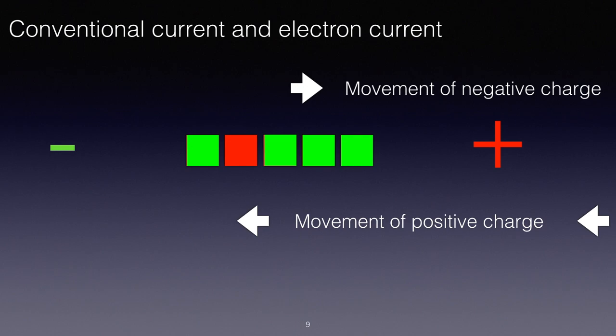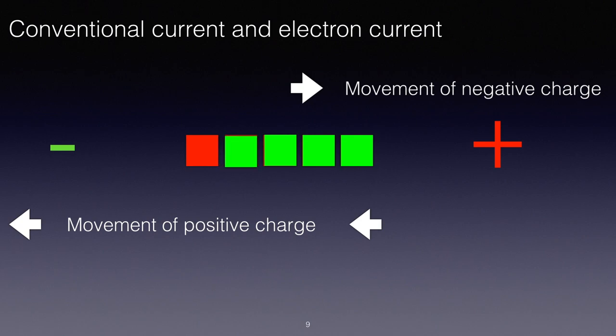So as the negative charge is moving from left to right, the positive charge is moving from right to left. So if we consider that current flow is the movement of charge, it is equally as valid to think of positive charge moving in the conventional current direction from plus to minus. Now sometimes during the course you will have to think in terms of electron current flow and sometimes you will have to think in terms of positive charge.